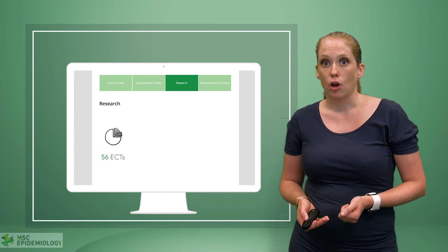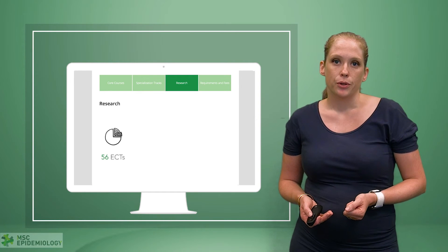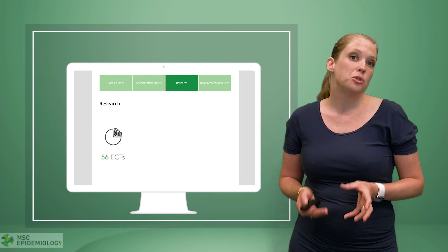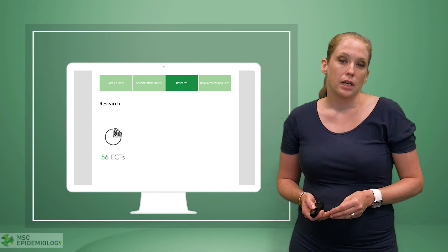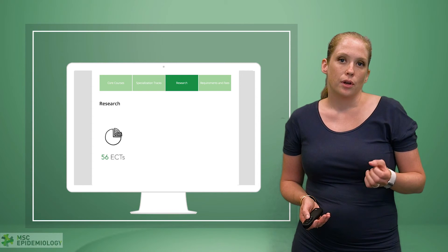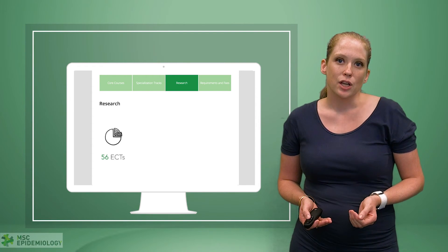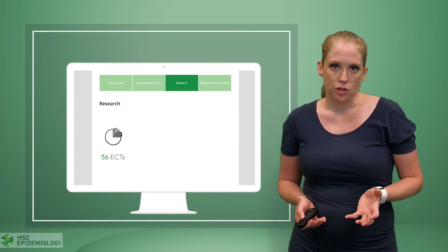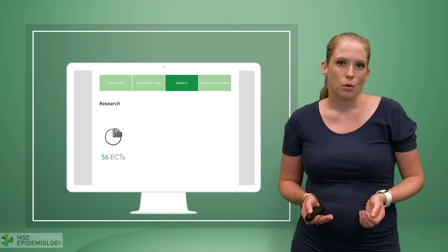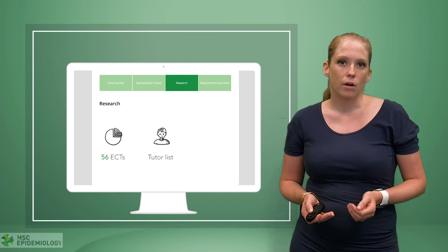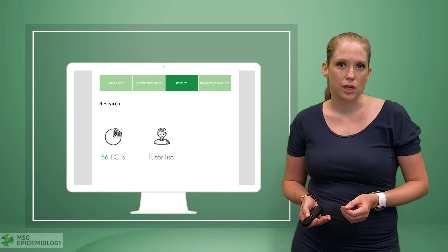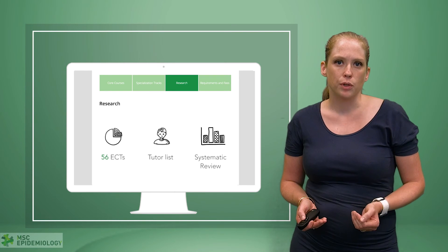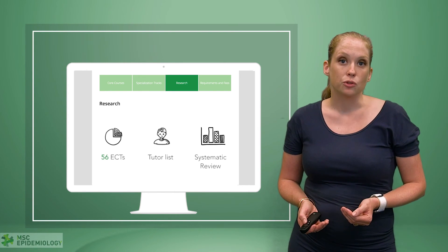Your research project has a large study load — 56 ECTS. At 14 hours a week, it's going to take you about two to three years. The nice thing is that you have the possibility to conduct research in your own interest field or based on your own research question from daily practice. There's a tutor list where all our epidemiologists are named along with their fields of interest, and you can choose your own — either to write a systematic review with them or to actually perform a clinical trial.